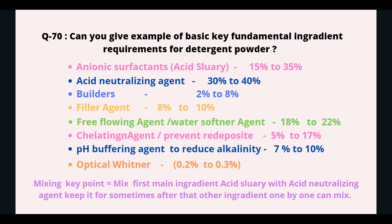Can you give examples of basic key fundamental ingredient requirements for detergent powder? Anionic surfactant acid slurry 15% to 35%, acid neutralizing agent 30% to 40%, builder 2% to 8%, peeler agent 8% to 10%, free-flowing agent 18% to 22%, anti-redeposition agent 5% to 17%, pH buffering agent to reduce alkalinity 7% to 10%, optical brightener 0.2% to 0.3%. Mixing key point: mix the main ingredients — acid slurry with acid neutralizing agent first and keep for some time, then add other ingredients one by one.